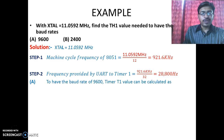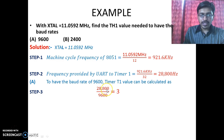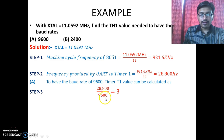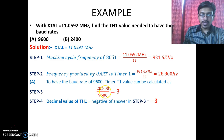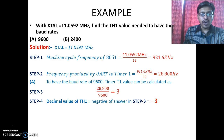Now, to have a baud rate of 9600, we will calculate the value required to be loaded into TH1. For that, we divide 28800 Hz — the frequency provided by UART to Timer 1 — by 9600, the baud rate we want to set, and the answer we get is equal to 3. The value required to be loaded into TH1 in decimal is the negative of that answer, which is minus 3. So if we load TH1 with minus 3, we will have a baud rate of 9600.